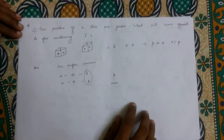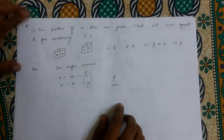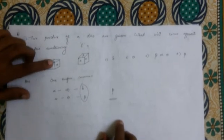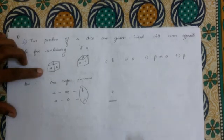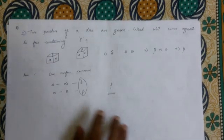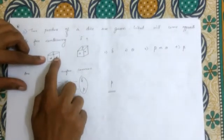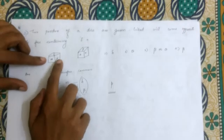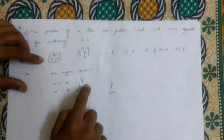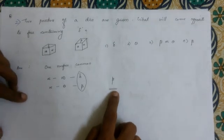Second problem: Two positions of a dice are shown. What will come opposite to the face containing Delta? We use the common one-surface method. Alpha is the common surface. From the figures: infinity is opposite to theta, and delta is opposite to beta. Therefore, alpha is opposite to the remaining symbol, and Delta's opposite face is Beta.